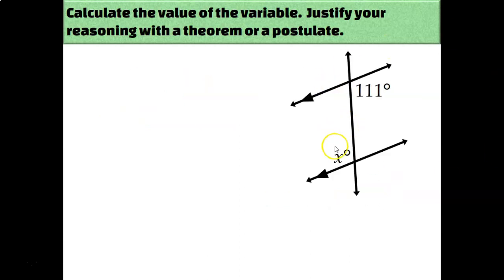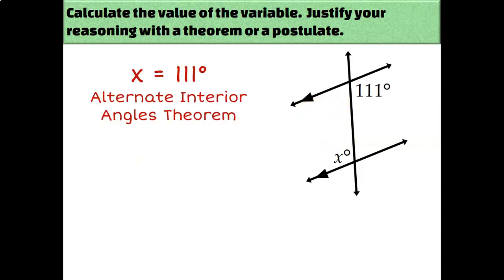Our next example: the two angles are alternate — because they are on opposite sides of the transversal — and interior, because they're in between the two parallel lines. Alternate interior angles are congruent to each other, so x must measure 111 degrees by the alternate interior angles theorem.